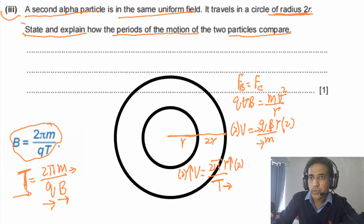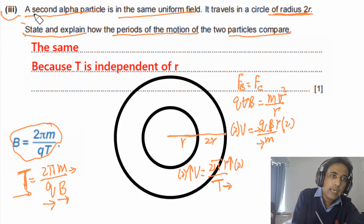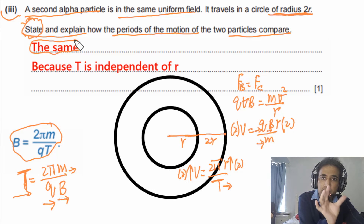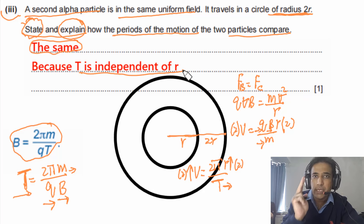When writing up this answer you need two things: first, state clearly that the periods are the same — the examiner will award a mark for that statement alone. Second, explain why, for example by writing that T is independent of r. That earns the second mark.